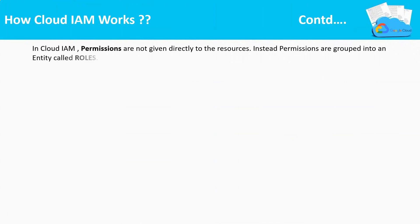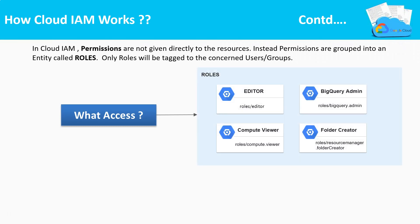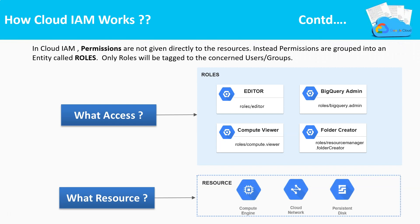In Cloud IAM, permissions are not given directly to the resources. Instead, similar permissions are grouped into an entity called roles. Every role will have multiple permissions at the back. We can see some of the Google-defined roles here. Only roles which have the necessary access or permissions will be tagged to the user identities, and with these roles the user can access the concerned resources.